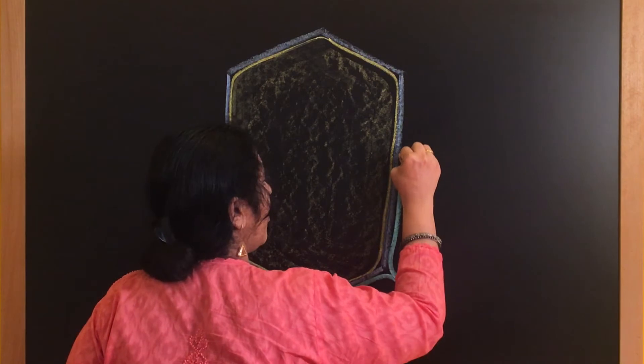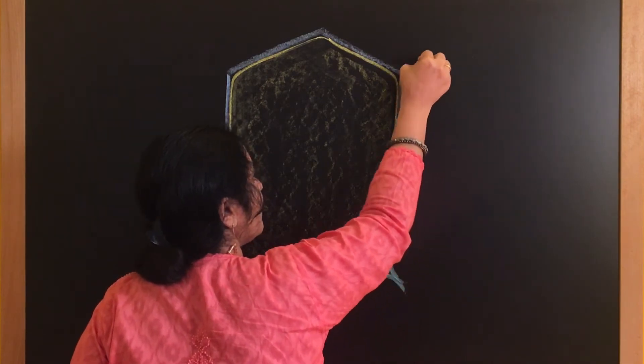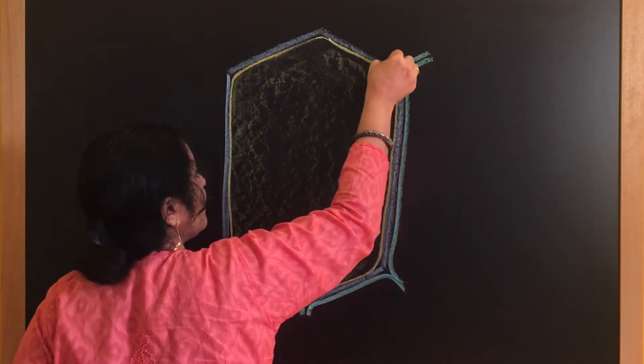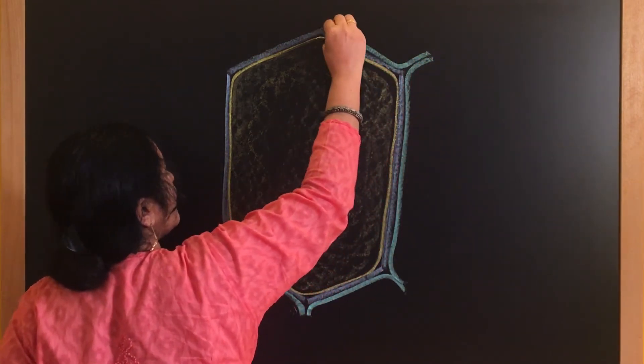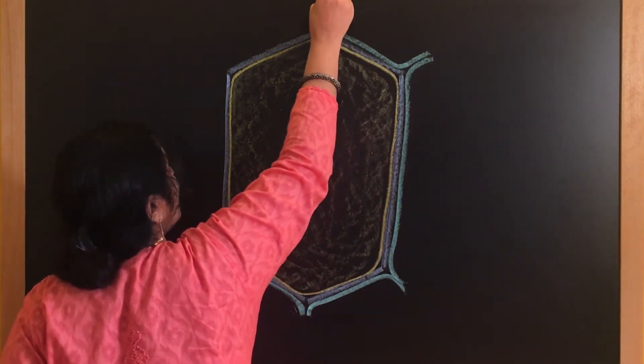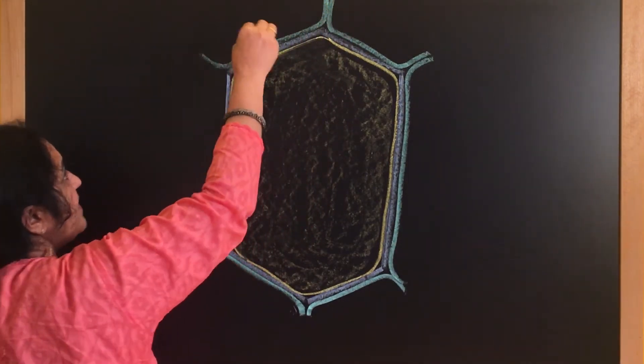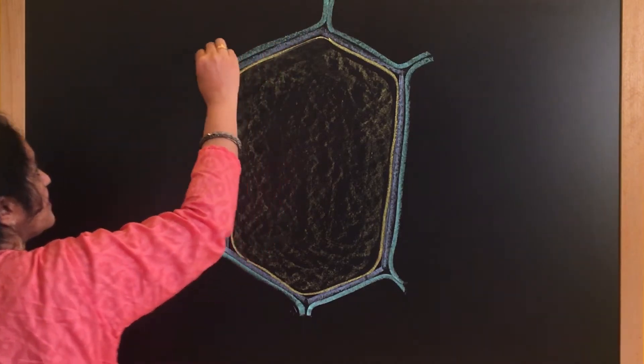This is the cell wall of the other cell which is present here. This is the cell wall of one more cell which is here next to it. Why we are drawing these lines? Because these plant cells are not isolated. They are always very closely associated with the neighboring cells.